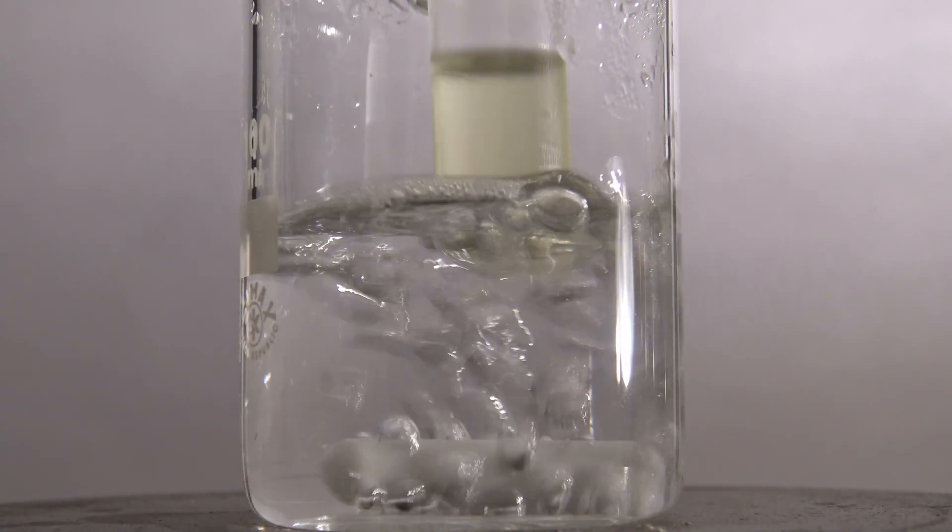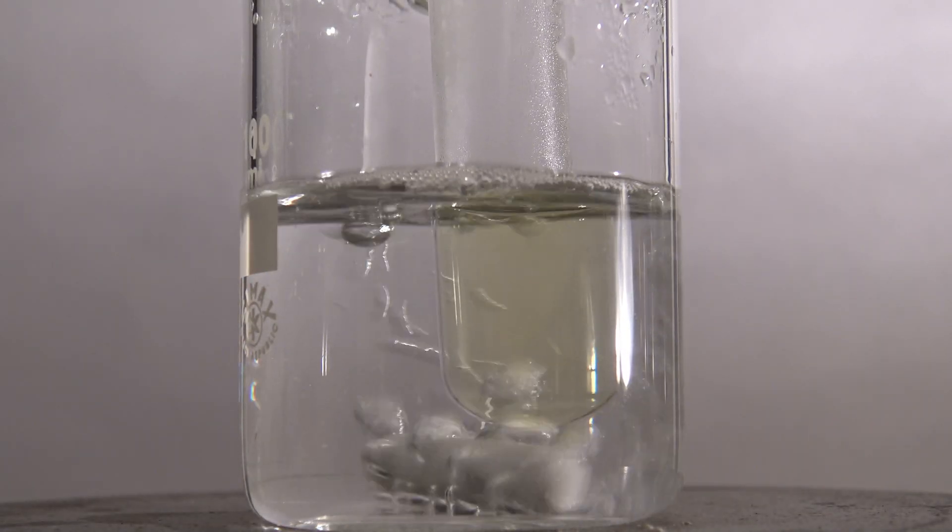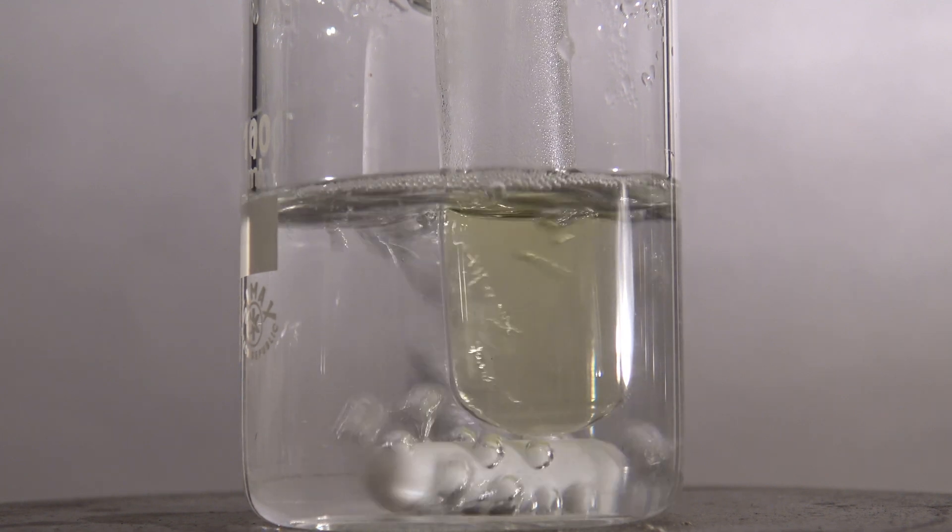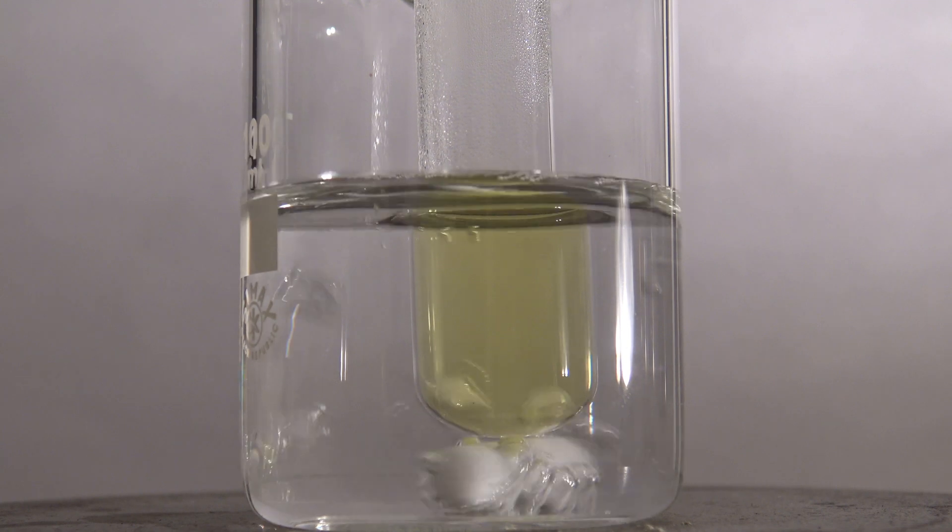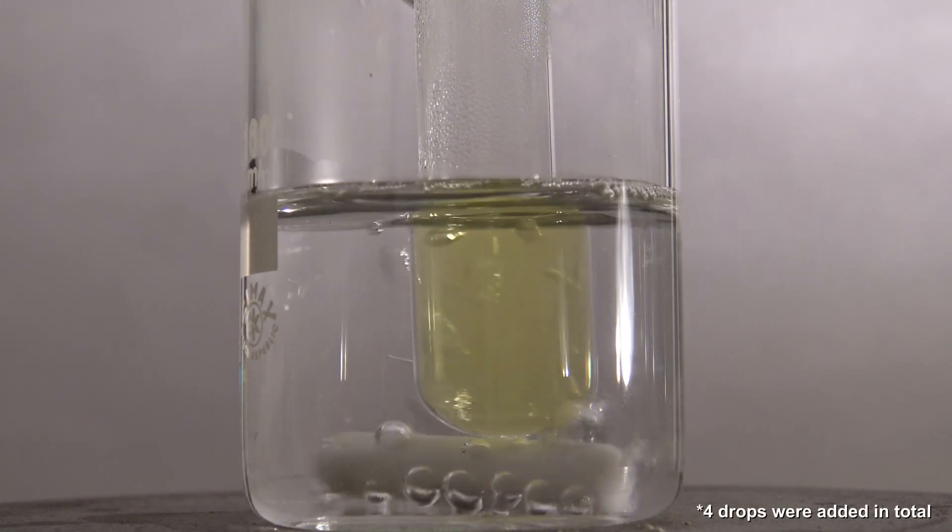By heating, the speed of the formation of precipitate can also be increased. The solution turned only a bit cloudy, so three drops of diluted ammonia were added while heating.